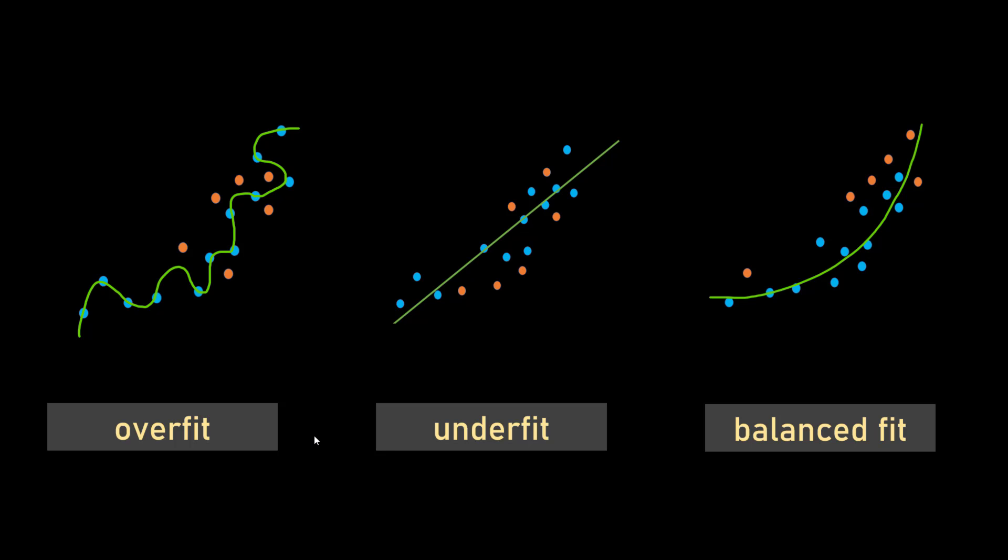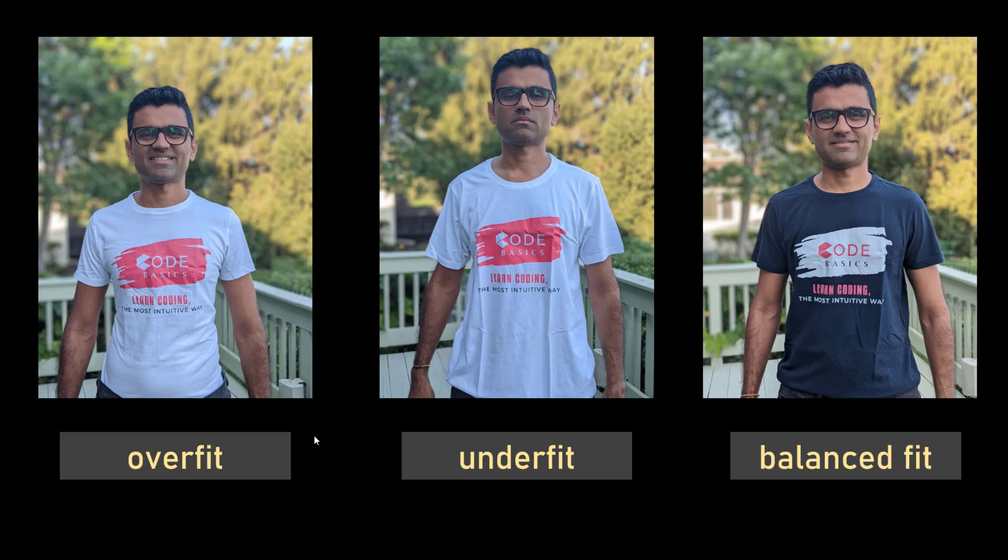So we already covered these concepts. Whenever you have an overfit model, it's likely that you will get high variance. When you have underfit model, it is likely that you will get high bias. When you have balanced fit, you will get low variance, low bias. As a data scientist you want to come up with a model that has a balance fit, just like our t-shirt. You want to go to a store and buy a t-shirt - you will always buy a balanced fit t-shirt.